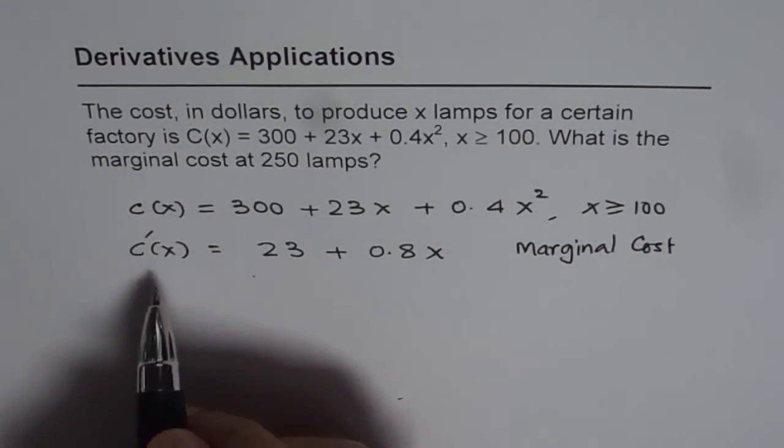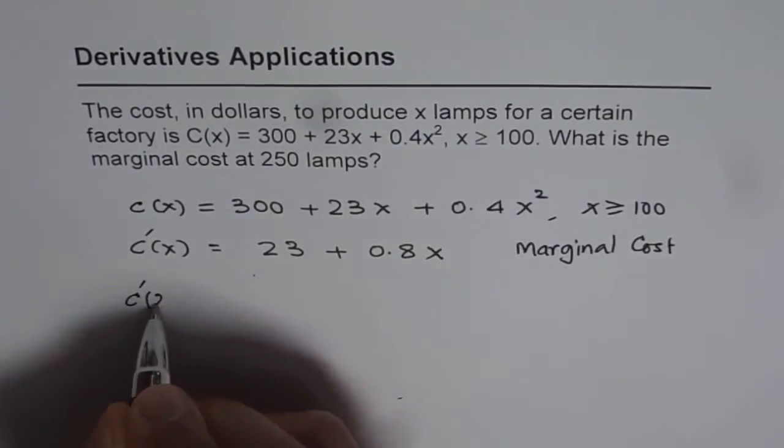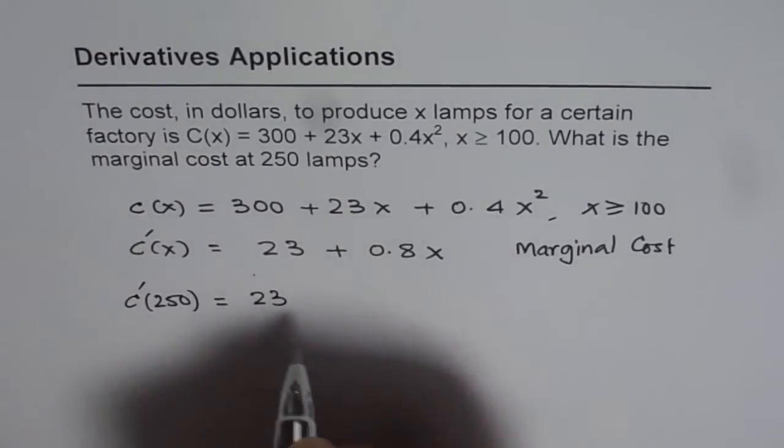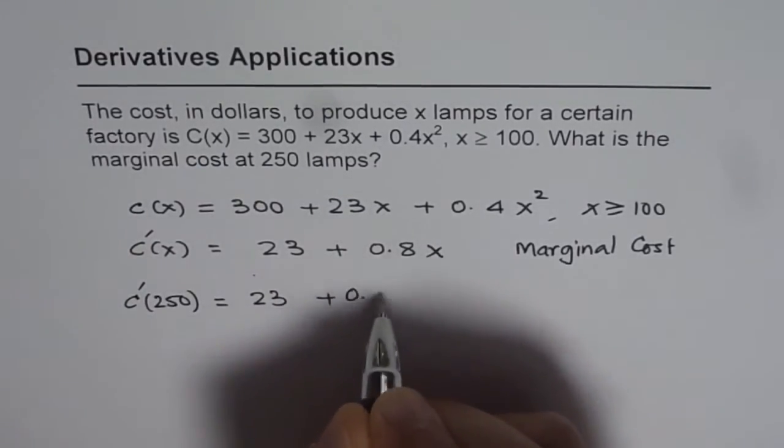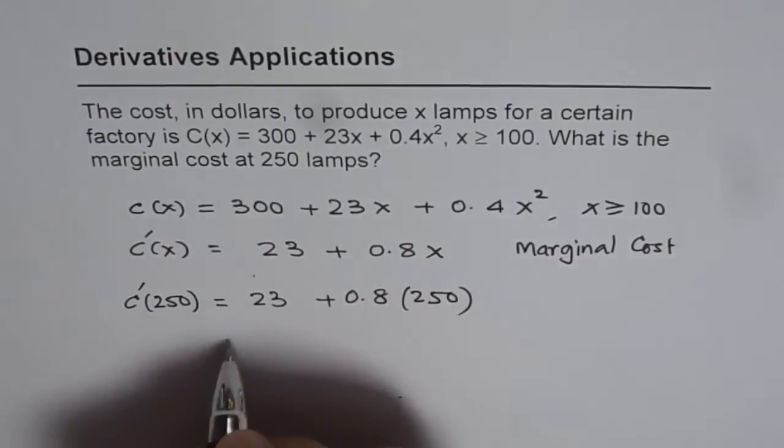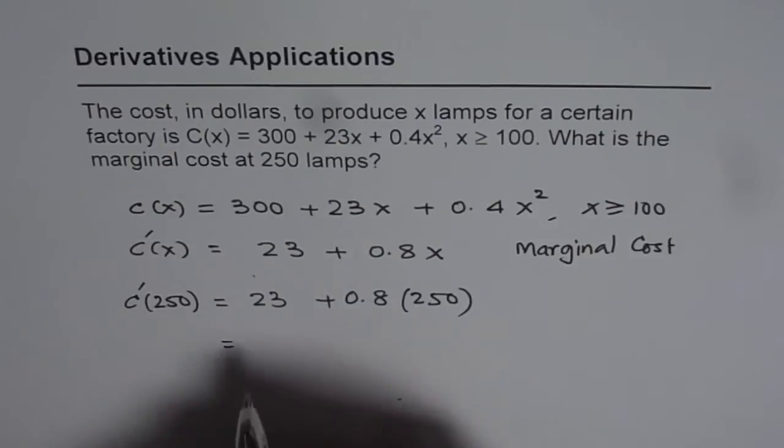Now we need to find marginal cost at 250 lamps. That means C'(250) = 23 + 0.8 × 250. We can use the calculator and find the answer. So we have 23 + 0.8 × 250 = 223.